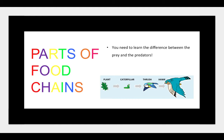Well, the thrush is prey for the hawk because the thrush gets eaten by the hawk. However, the thrush is also a predator because it is eating the caterpillar. The caterpillar is food for the thrush; however, the caterpillar is a predator for the plants.